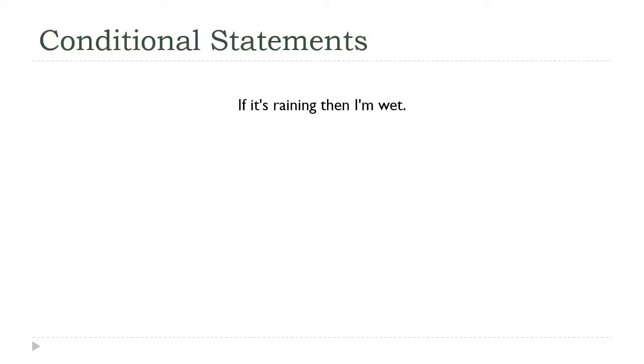We've got two more connectives to talk about, the conditional and the biconditional. The conditional is really the meat and potatoes of mathematics. It's this if-then statement. The key words you should look for are if and then. If I let P be it's raining and I let Q be I'm wet, I would represent this with an arrow. I would read this as if P then Q.